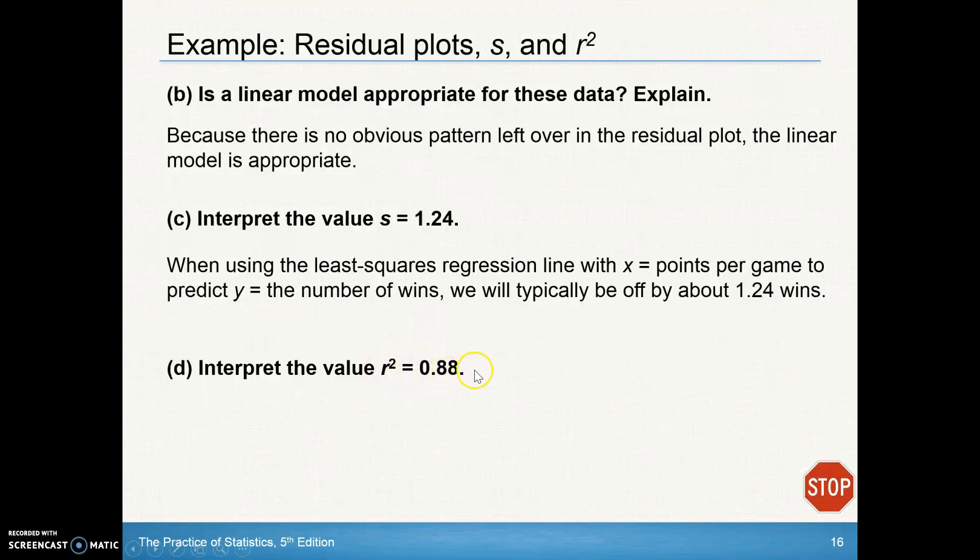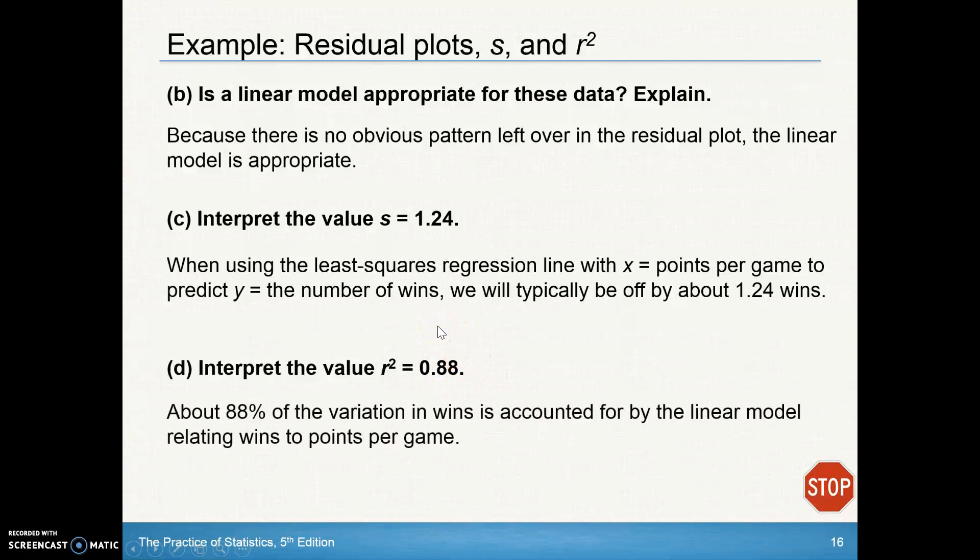That r-squared value talks about the percentage of the points that follow, or are accounted for by the regression line. About 88% of the variation in wins is accounted for by the linear model relating wins to points per game. Or, about 88% of the dots on the scatter plot follow the linear model well.